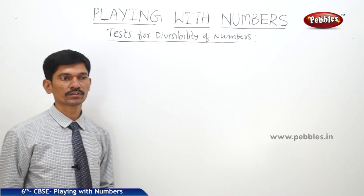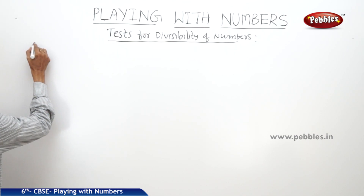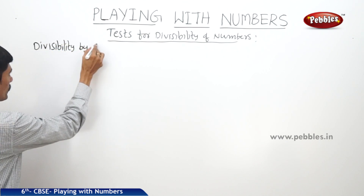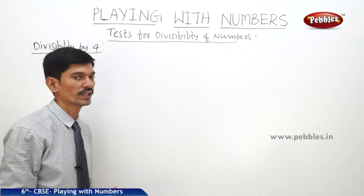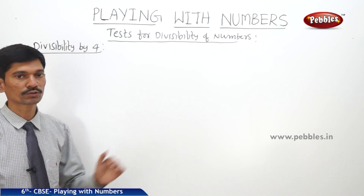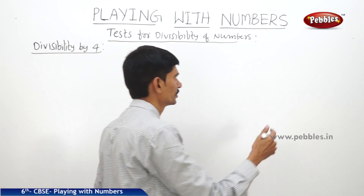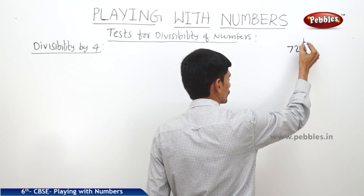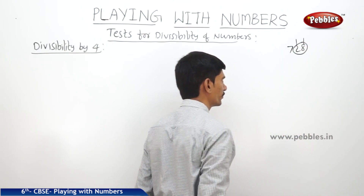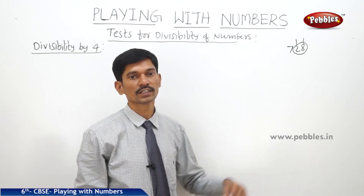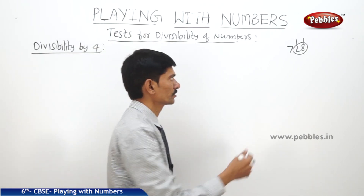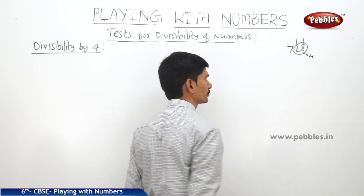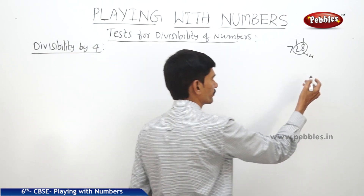Now let us take the next divisibility rule: divisibility by 4. This rule is based on the number formed by the last 2 digits of the given number. If you take 728, the number formed by the last 2 digits is 28. If the number formed by the last 2 digits is divisible by 4, then the given number is also divisible by 4. Since 28 is divisible by 4, the number 728 is also divisible by 4.